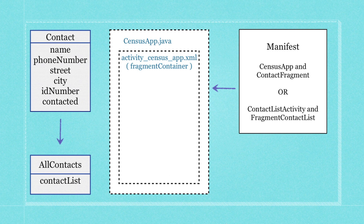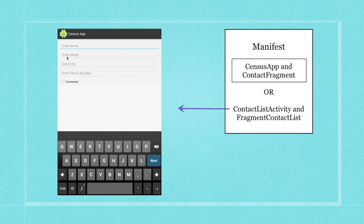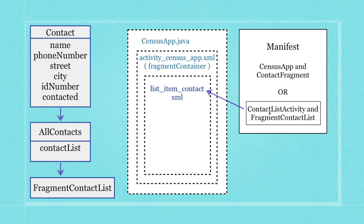In the previous tutorial we set up the census app and the fragment container, and moved in the contact fragment which provided the capability of adding information regarding name, address, and so forth to each contact. Now what we're going to be doing is making our contact list which is going to hold all of our contacts and show them all on the screen at the same time.